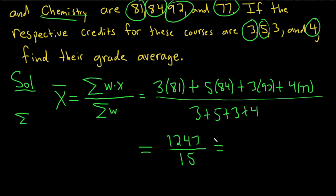So if we work this out, we get 1247 divided by 15. 83.13. And so that would be the final answer.